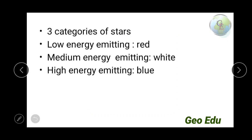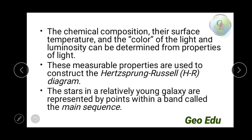Because of nuclear fusion, light — or electromagnetic energy — is emitted. Based on this light-emitting capacity, we can divide stars into three categories: low energy emitting stars that appear red, medium energy emitting stars that appear white, and high energy emitting stars that appear blue. From this electromagnetic energy, we can infer information about a star: its chemical composition, surface temperature, color, and luminosity. Luminosity means how much light it has emitted into space.